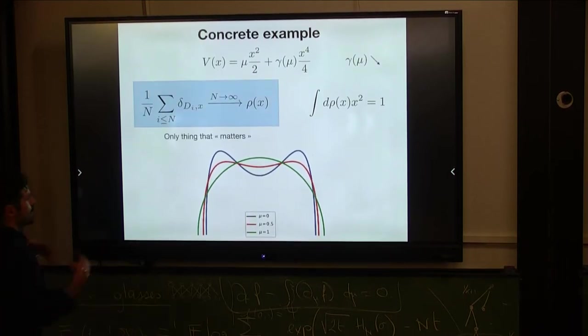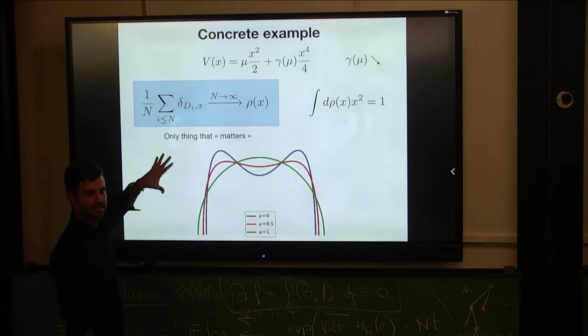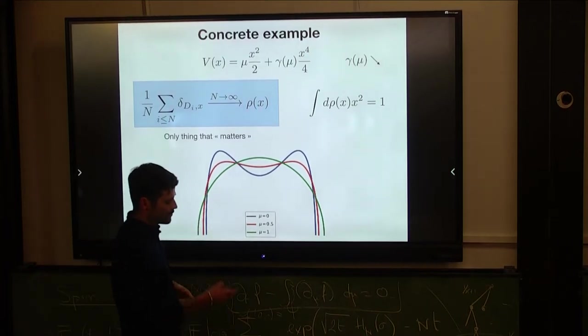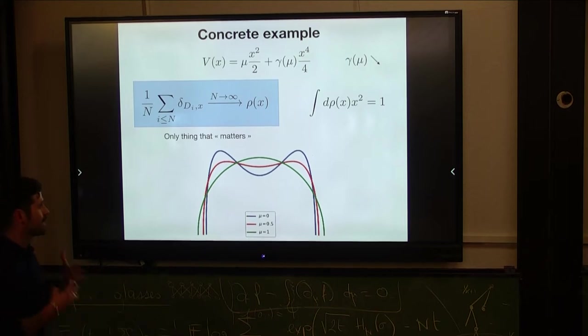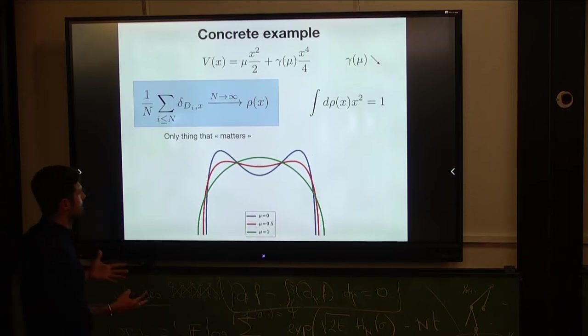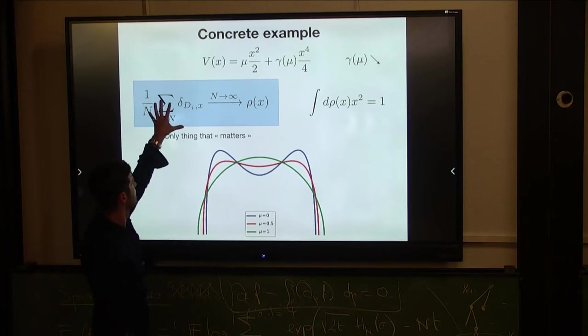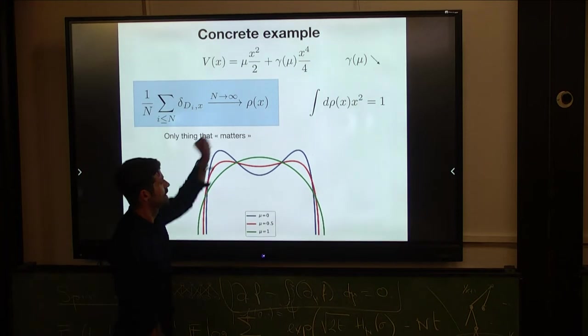I claim that all the results I will present to you, the details of the density don't really matter. For the analysis, we will reconsider this kind of trace ensemble to generate the noise. But actually, the results will hold as long as you have this kind of empirical density converging to the same distribution.